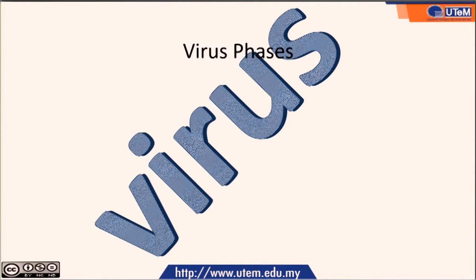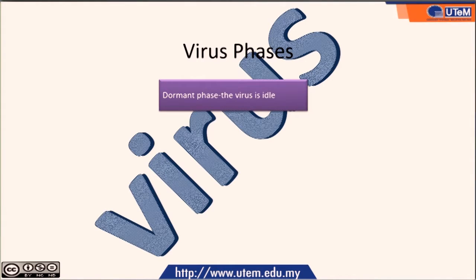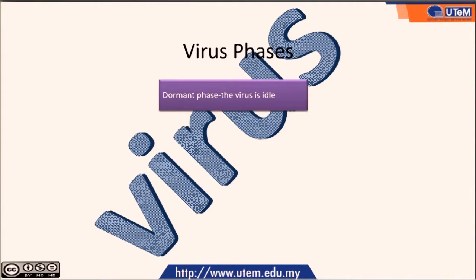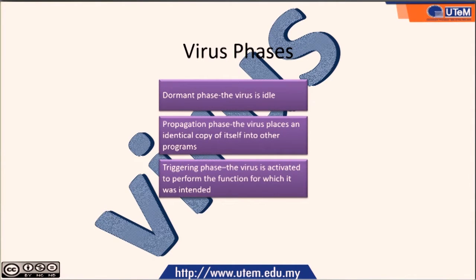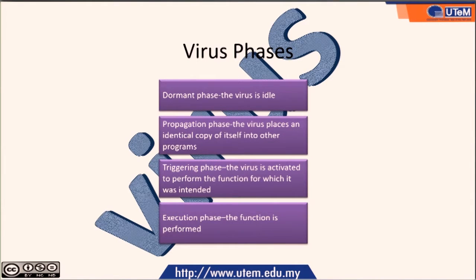What are the phases of viruses? When a virus infects, it can be in a dormant phase where the virus is idle — it has infected the host but is doing nothing. Next is the propagation phase, where the virus places an identical copy of itself into other programs. Then the triggering phase, where the virus is activated to perform the function it was intended for. Finally, the execution phase, where it executes that function.